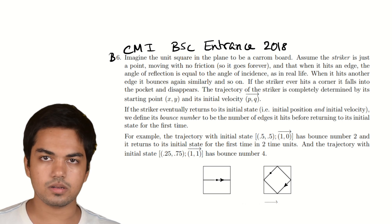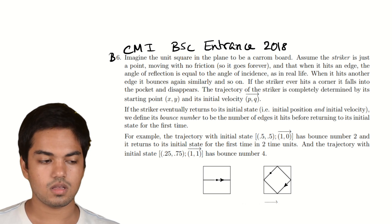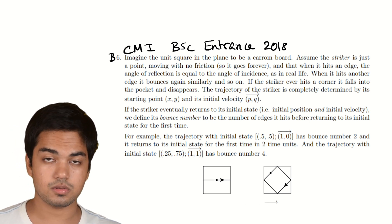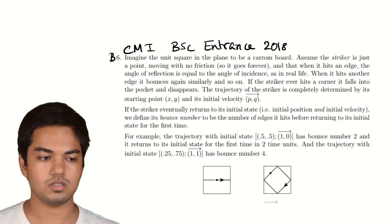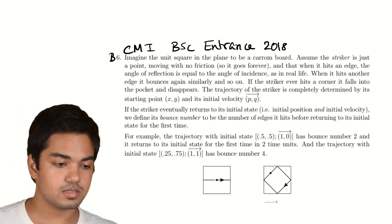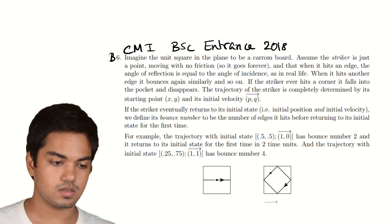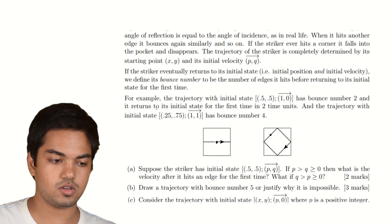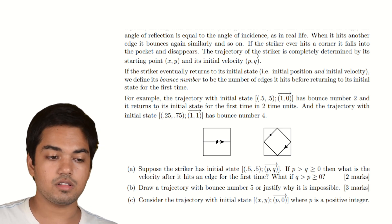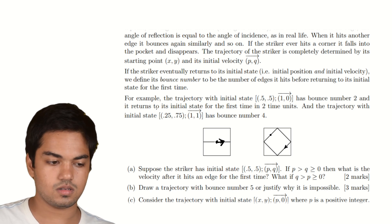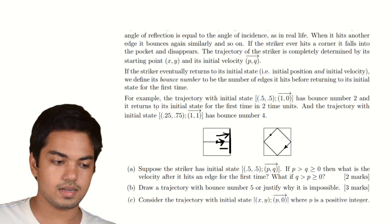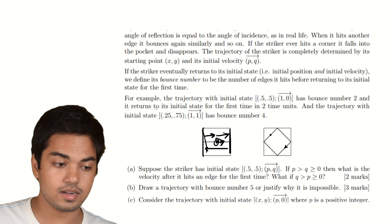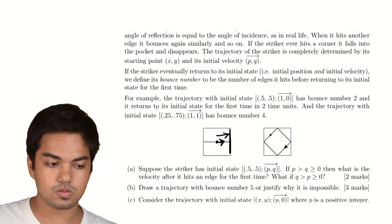The trajectory of the striker is completely determined by its starting point and its initial velocity. If the striker eventually returns to its initial state — the initial position and initial velocity — we define its bounce number to be the number of edges it hits before returning. For example, the trajectory with initial state (0.5, 0.5) and velocity (1, 0) has bounce number 2, because it bounces off one wall, returns, bounces off the other wall, and only then comes back to its initial state.